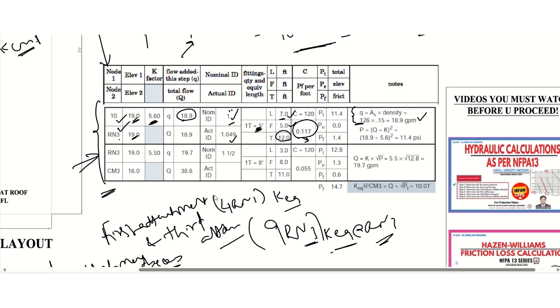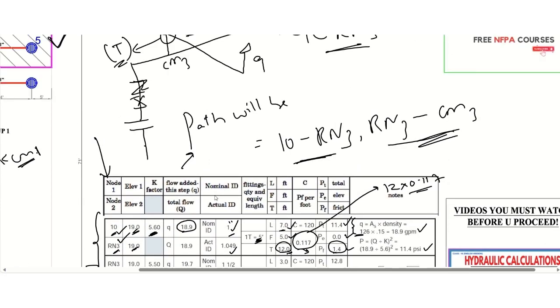And then the length between 10 and RN3 is seven feet, so total will be 12 feet. And here we calculated the friction loss by using Hazen-Williams friction loss formula, which was already explained earlier. And apart from that, we have calculated the total pressure 11.4 PSI that we have mentioned here. Elevation is zero since the elevation for 10 and RN3 both are same. And the friction loss will be 1.4. We have to multiply 12 by 0.117, so we are going to get about 1.4.